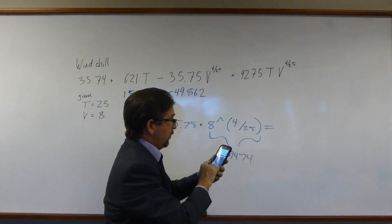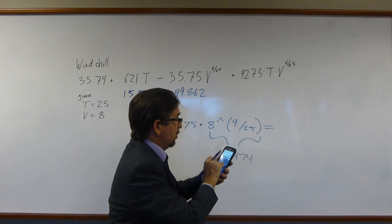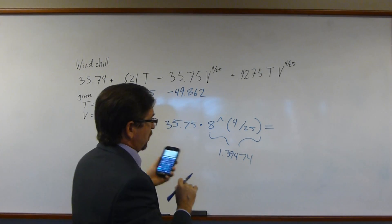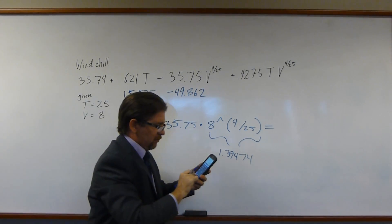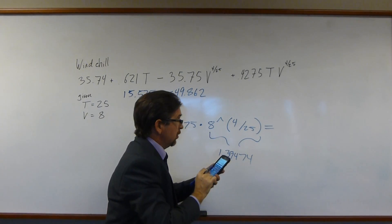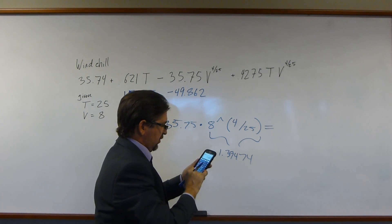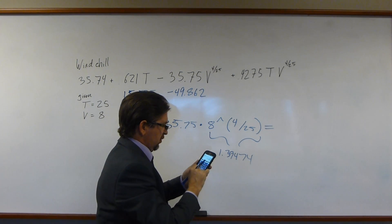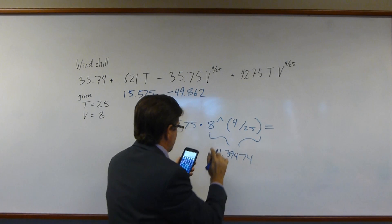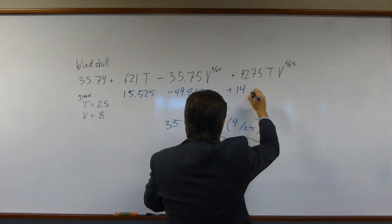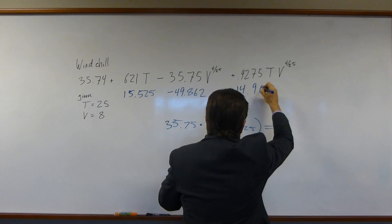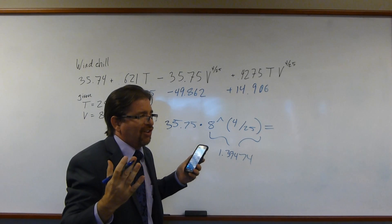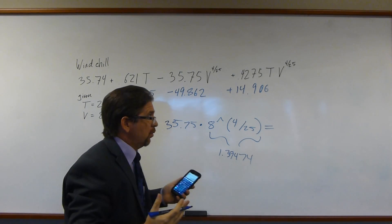So, I'm going to type in 0.4257 times T. My T is 25 right here. My V is 8. We were trying to figure out what this was. It's that number right there. So, for this one, I get 14.906. Of course, we have a lot more decimals than that. They aren't all necessary or accurate. We know it within three decimal places.